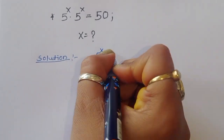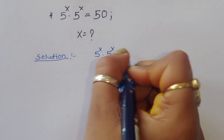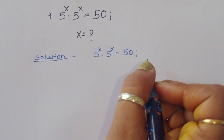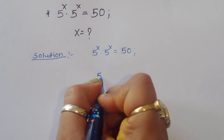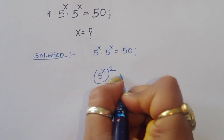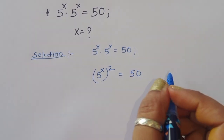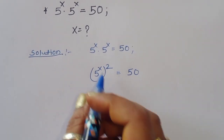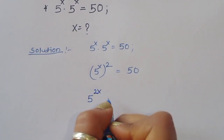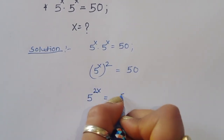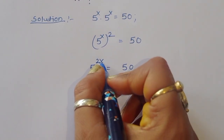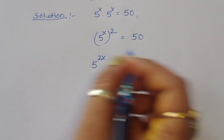5^x times 5^x is equal to 50. We can write this as 5^x squared, that is (5^x)^2, which equals 5^(2x) is equal to 50. Now we have to find out the value of x.